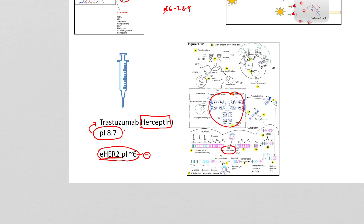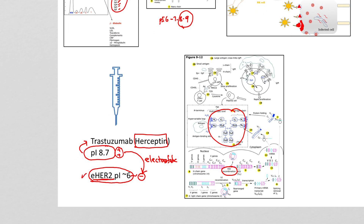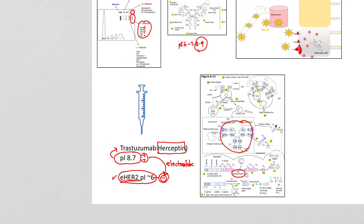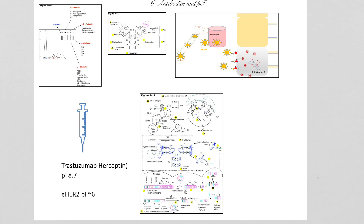For antibody drugs like Herceptin, manufacturers prefer a high PI. Herceptin has a PI of 8.7, while its receptor HER2 on the cell surface has a PI of around 6, giving it more net negative charges. This electrostatic complementarity — positive charges on the antibody, negative charges on the receptor and cell surface — helps the antibody bind its receptor more effectively. By engineering specific amino acids to increase the PI of a drug antibody, we can improve its ability to bind negatively charged cell surfaces and receptors.